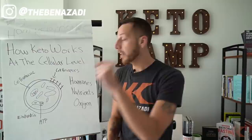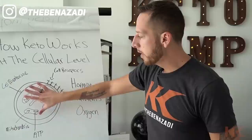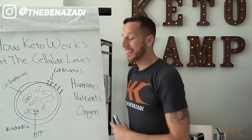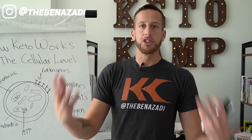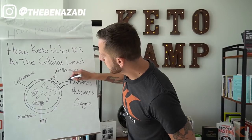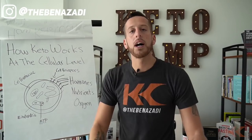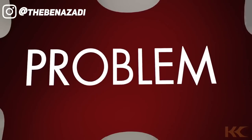On the cell membrane sit these cell receptor sites, also called integral membrane proteins. We need to understand the communication process between the cells, the receptor sites, your hormones, the nutrients you're eating, and the oxygen you're breathing. We have at least 600 hormones in the body. Hormones are the language of the human body — chemical messengers sending signals to your cells so these receptor sites pick them up and tell your cells to burn fat, produce energy, and feel good.